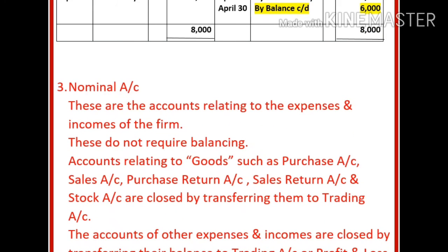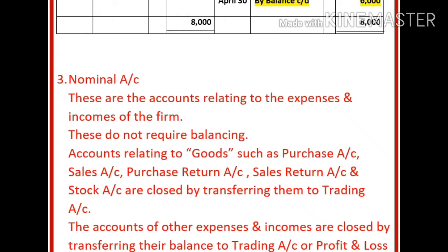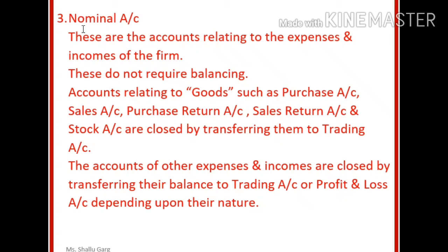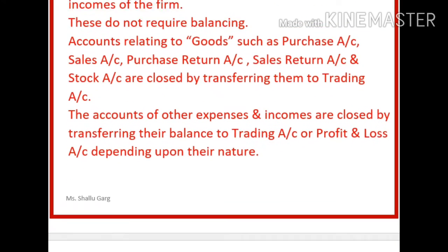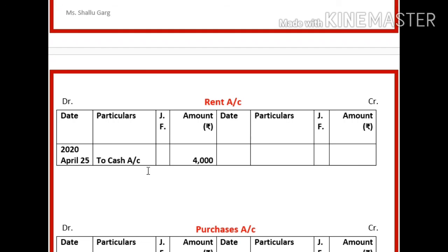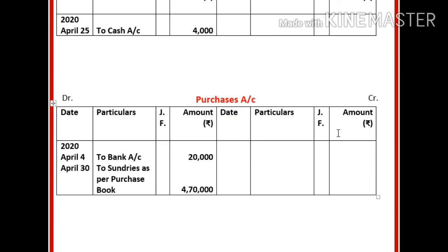The third type of account is the nominal account — accounts relating to expenses and incomes of the firm. These do not require balancing, because expenses will show a debit balance and incomes will show a credit balance. At the year-end, nominal accounts are closed directly by transferring their balance to the trading account or the profit and loss account, depending upon their nature. For example, rent account with 'by cash 4,000' need not be balanced. Similarly, purchases account and sales account need not be balanced — purchases will represent a total, such as rupees 4,90,000, as a debit balance.